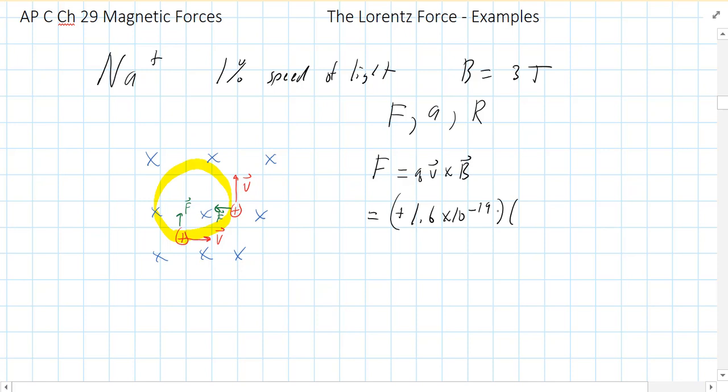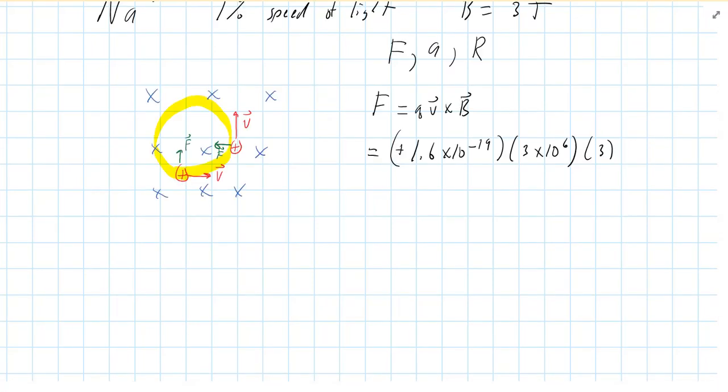Our V is 1% the speed of light. If you look up the speed of light, the speed of light is 3 times 10 to the eighth meters per second. So 1% of that would be 3 times 10 to the sixth meters per second. And then the B I gave you was three teslas. So if I plug those in, I get a force, a very tiny force, 1.44 times 10 to the negative 12th newtons.